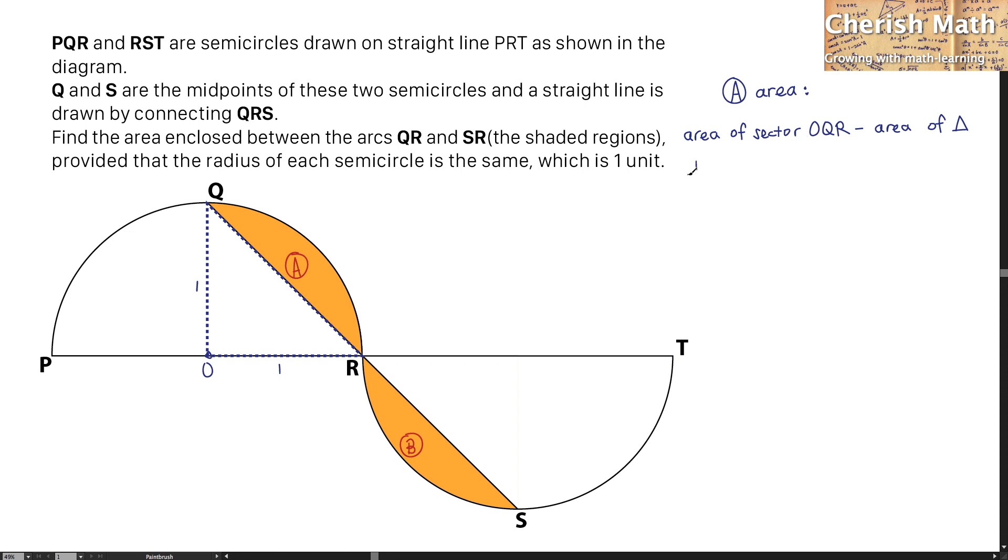The area of sector OQR is using one quarter of a circle, which is one over four, multiplied by pi, the radius one squared, minus the area of the triangle using one half, multiplied by the base which is one unit, and the height is one unit as well.